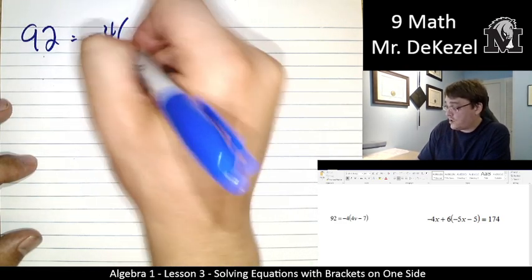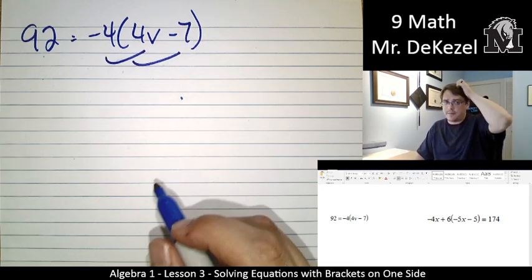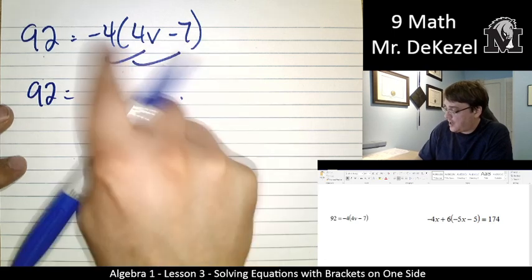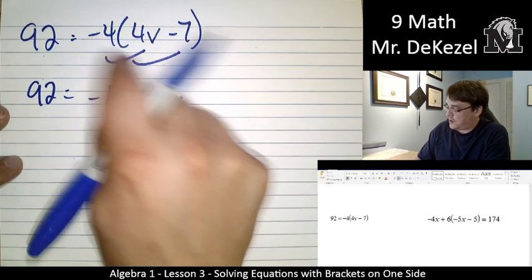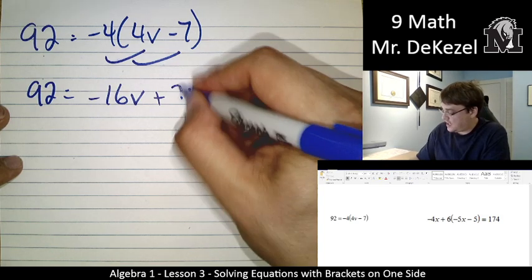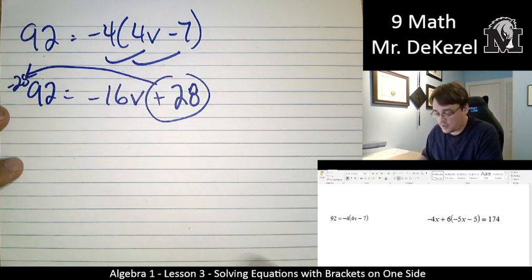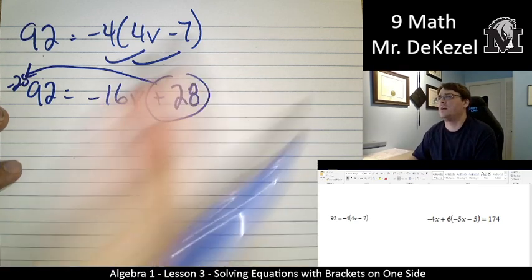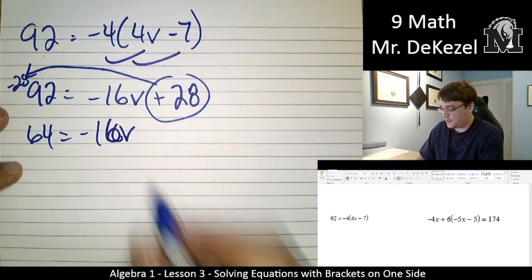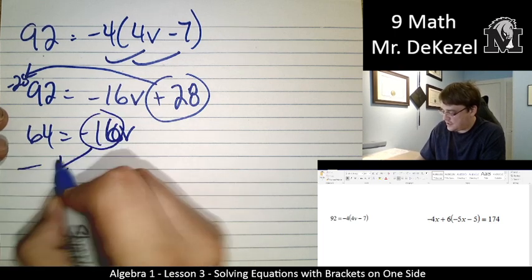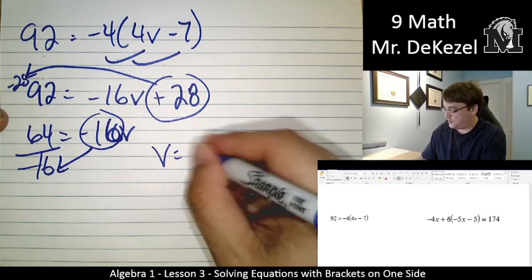92 is equal to minus 4 times (4v minus 7). We're going to go ahead and distribute the minus 4 through the brackets. It's on the right-hand side, but that doesn't really matter. We're going to do it anyway. 92 is equal to minus 4 times 4 is minus 16v plus, because minus times minus, so 4 times 7 is 28. We're going to move the 28 across the equal sign. It is minus 28 on that side. So 92 minus 28, that's 64. So 64 is equal to minus 16v. We're going to move the minus 16 down to the other side. 64 divided by minus 16, that's minus 4. So v is equal to minus 4.